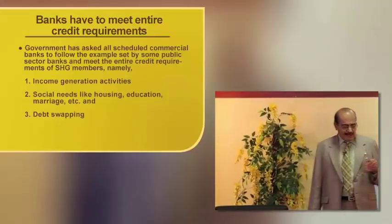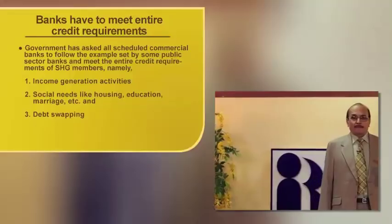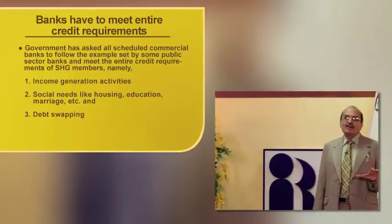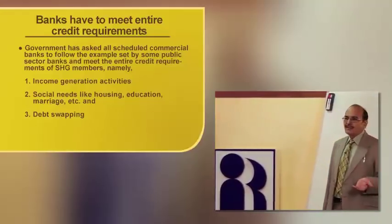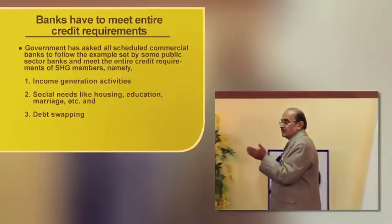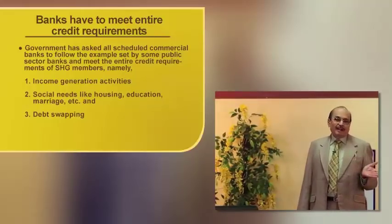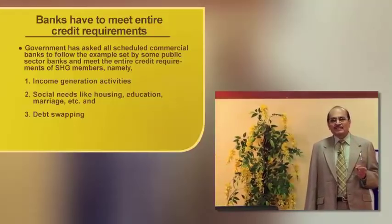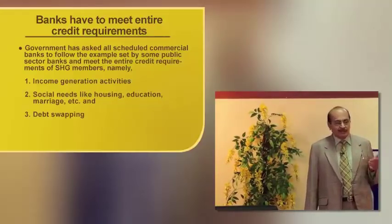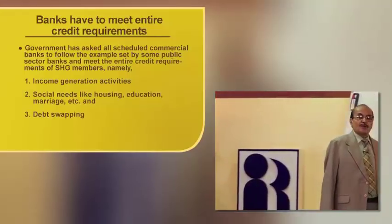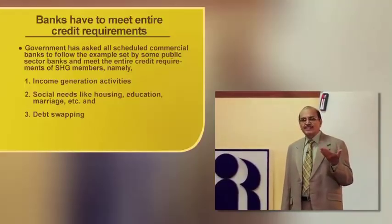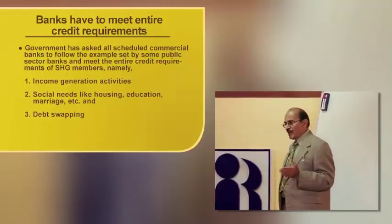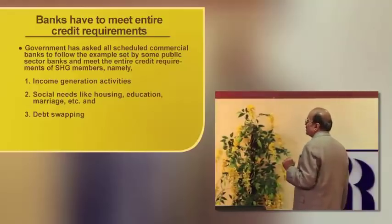Normally, the brick-and-mortar branches of banks are not available all over the country. The number of branches is barely around 40,000, as against the total number of villages of 6,34,000. In the absence of banks in these places, poor rural people approach money lenders where the rate of interest is very high. So if banks can provide loans at a cheaper rate, people will be in a position to pay back the high-cost loans and swap them with low-interest-rate loans.